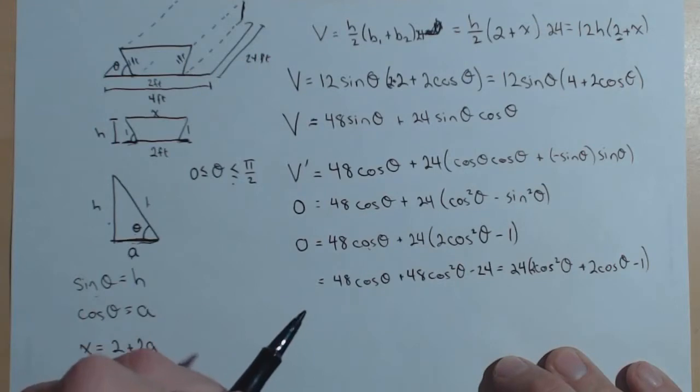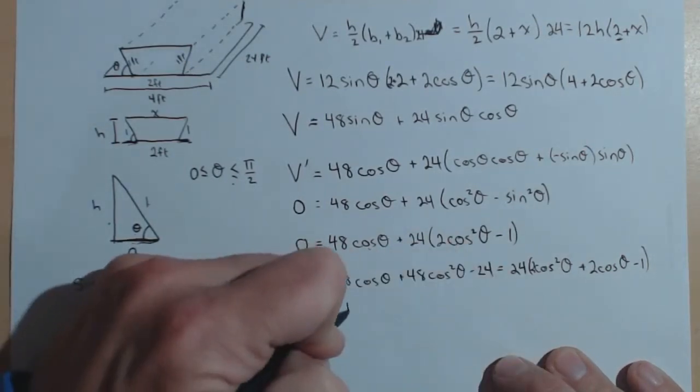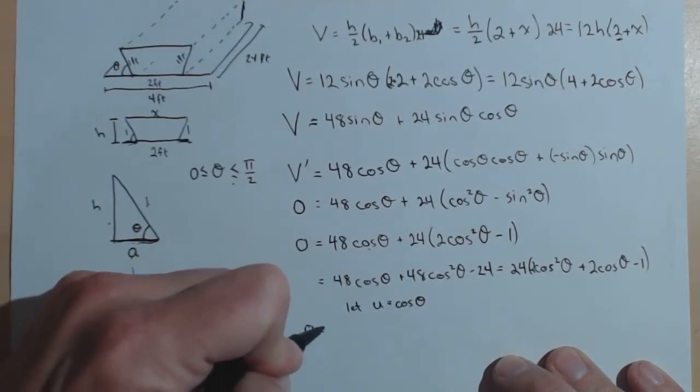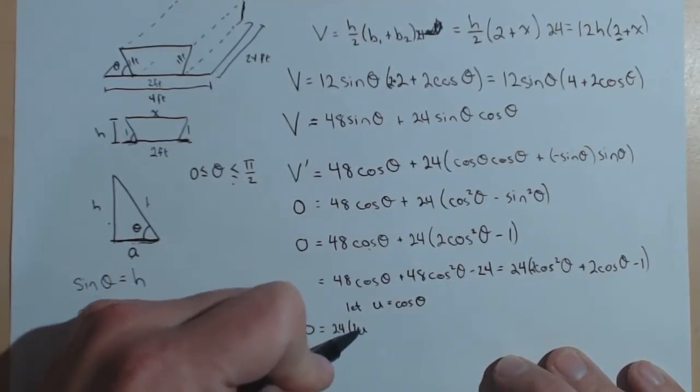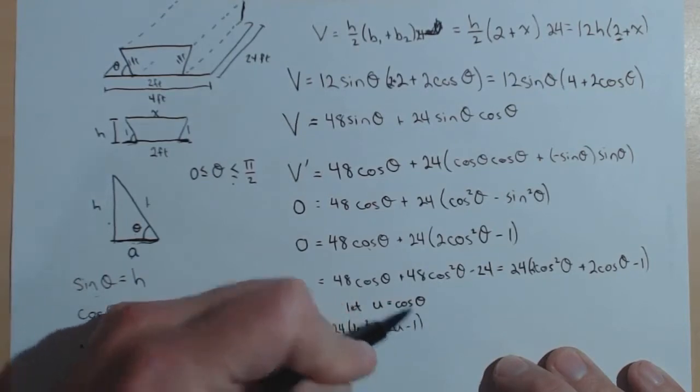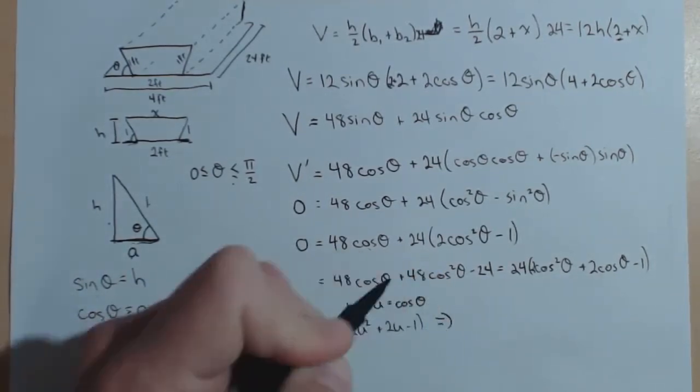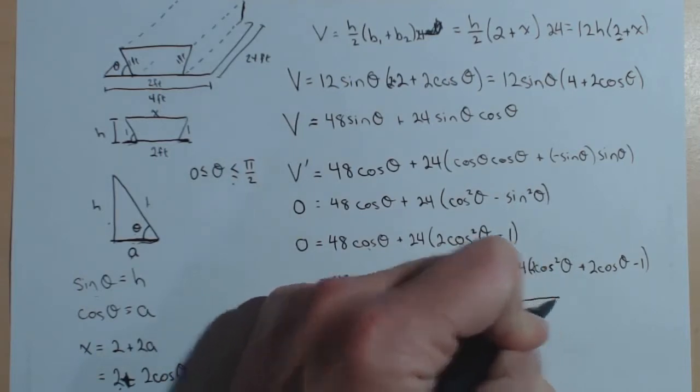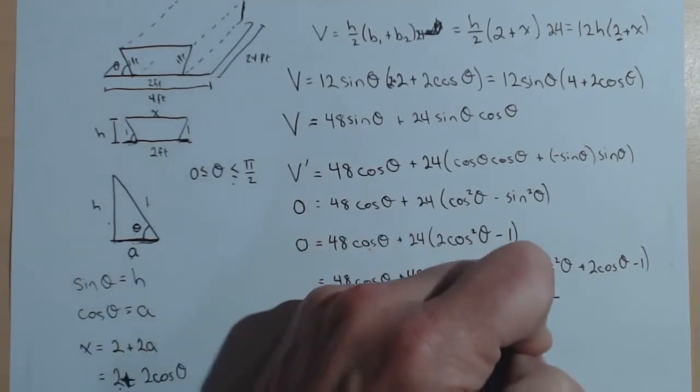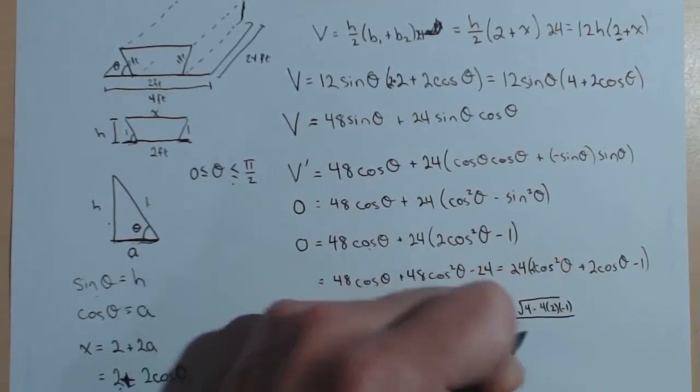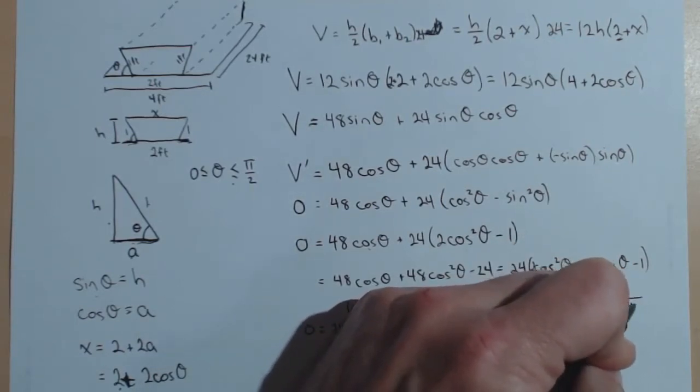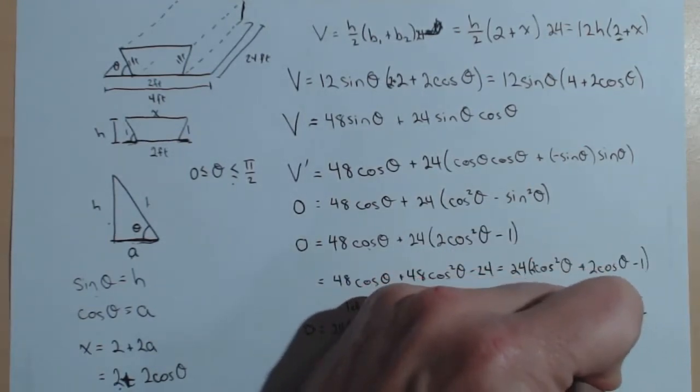Now, this may look a little bit messy, but what we're going to do is treat this, if I let u equal cosine theta, then what I have is the quadratic 24 times 2u squared plus 2u minus 1. This can be solved with the quadratic formula. So u equals negative 2 plus or minus the square root of 2 squared, 4 minus 4 times a, which is 2, times c, which is negative 1, all over 2a. Now, this will simplify down to negative 2 plus or minus the square root of 12 over 4, which can actually be simplified a little bit further, down to negative 1 plus or minus the square root of 3 over 2.